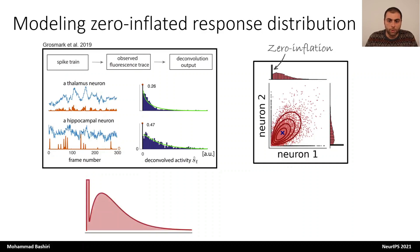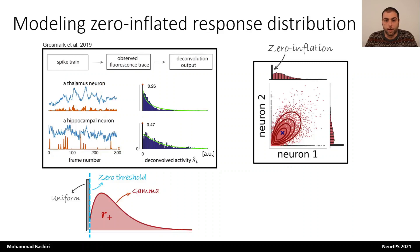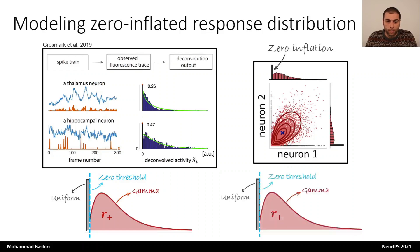If you imagine a zero-inflated distribution, the idea is to split the responses into zero responses and positive responses. The zero responses are modeled by a uniform distribution and the positive responses by a gamma distribution. As a result, the model is called zero-inflated gamma. Importantly, these two distributions are separated at the zero threshold and are not overlapping. The approach that we take in addressing the zero inflation is very similar, but instead of the gamma distribution, we use the FlowFA. This allows us to preserve all the properties of the FlowFA model while accounting for the zero inflation at the same time.